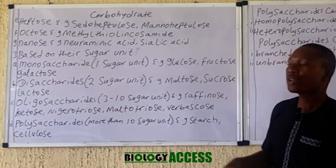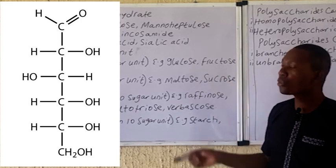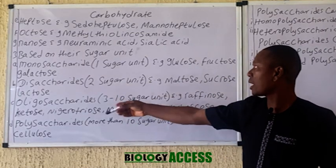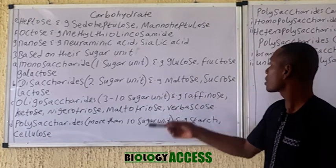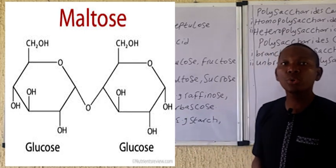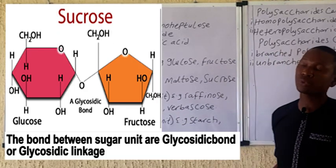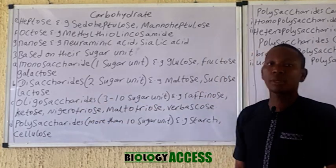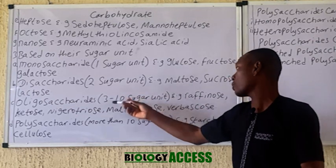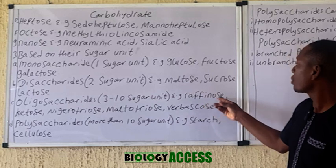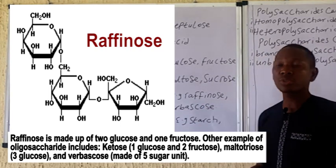Monosaccharides have just one sugar unit; examples include glucose and fructose. Disaccharides have two sugar units — the prefix 'di' is associated with two. An example is maltose, composed of two glucose units; the diagram of maltose is displayed on the board. We also have sucrose, composed of glucose and fructose. Oligosaccharides are comprised of between three to ten sugar units, though some authors regard three to fourteen. An example is raffinose; nigelotriose comprises three glucose units.